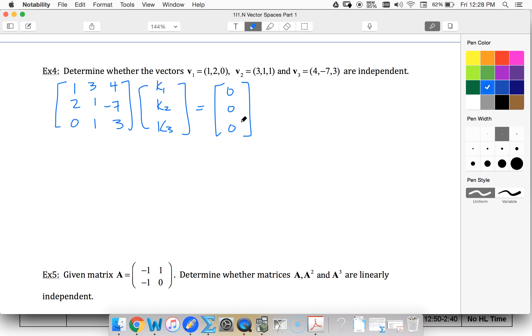All right, so looking at my linear combination, I'm going to make an augmented matrix, k1, k2, k3. I'm going to solve by using an augmented matrix. 0, 1, 3, 0, 0, 0.